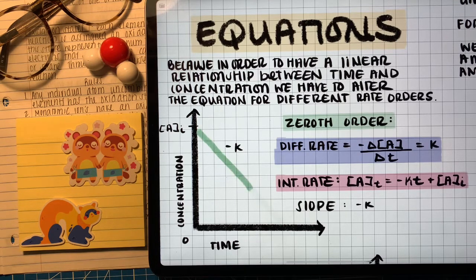When it comes to the zeroth order integrated rate law we can build a linear relationship simply just by plotting concentration by time and the linear relationship or the slope of that linear relationship is just the negative rate constant.